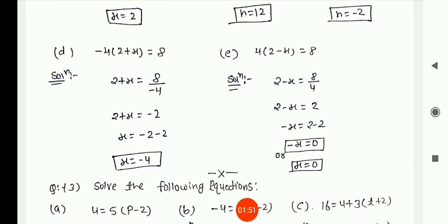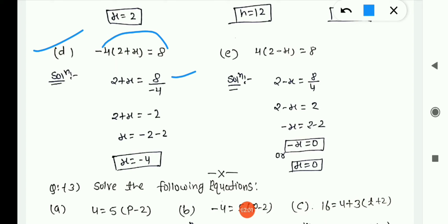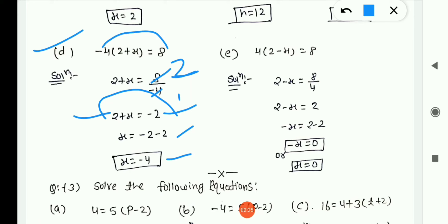Now (d) is: −4(2 + x) = 8. First transpose −4 — it is in multiplication, so moving to RHS gives division: 2 + x = 8/(−4) = −2. Shift +2 to RHS — it becomes −2: x = −2 − 2 = −4.